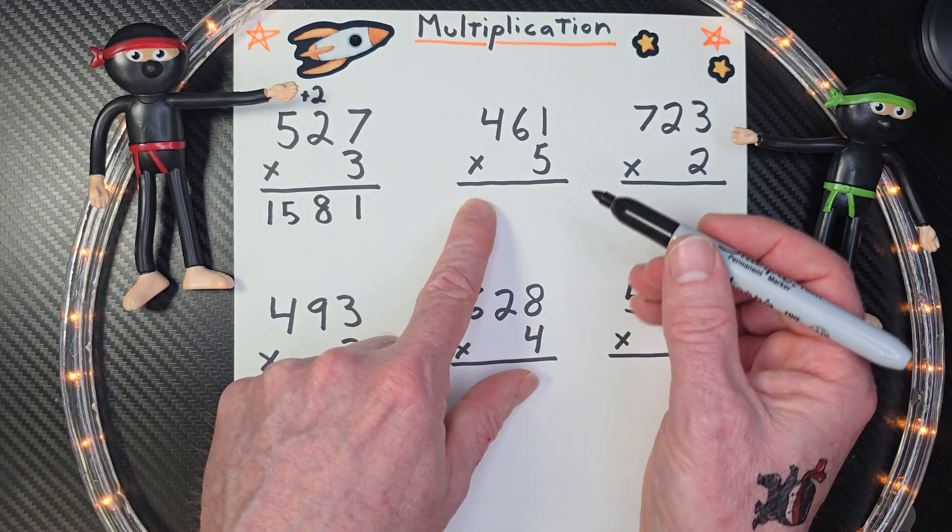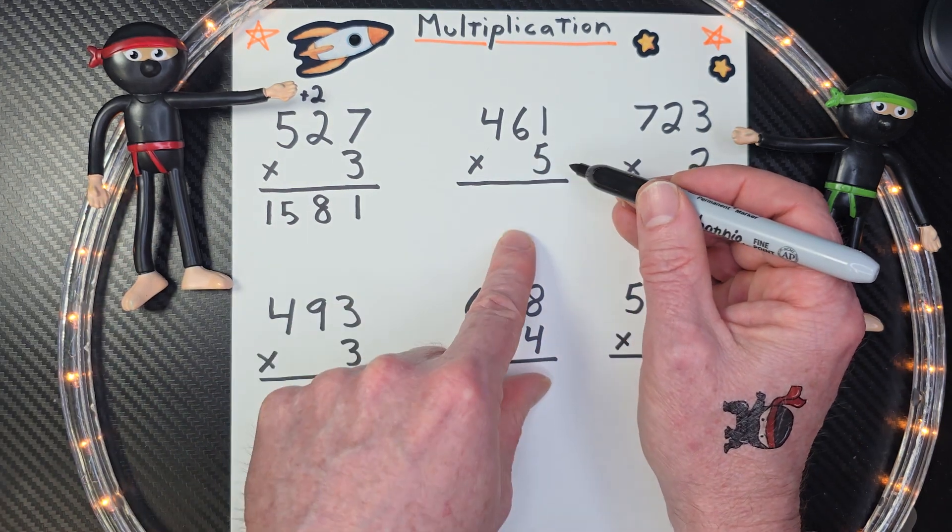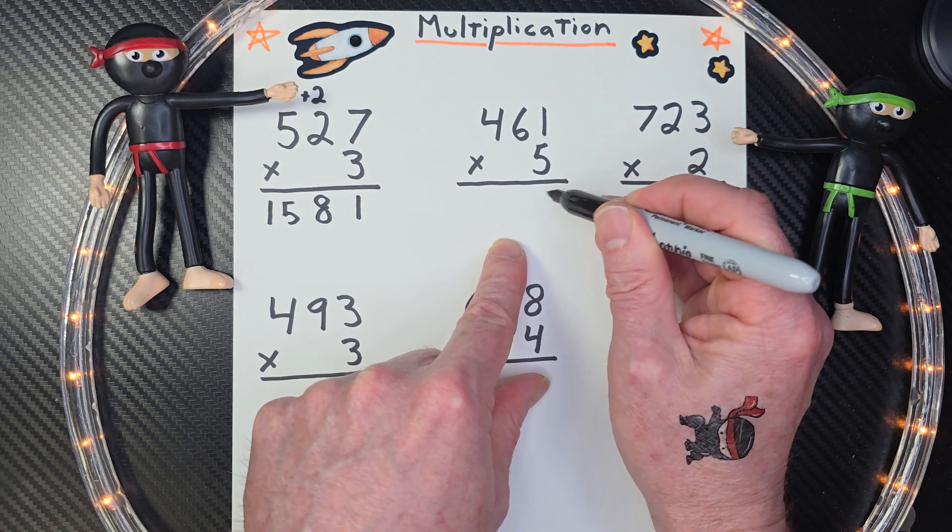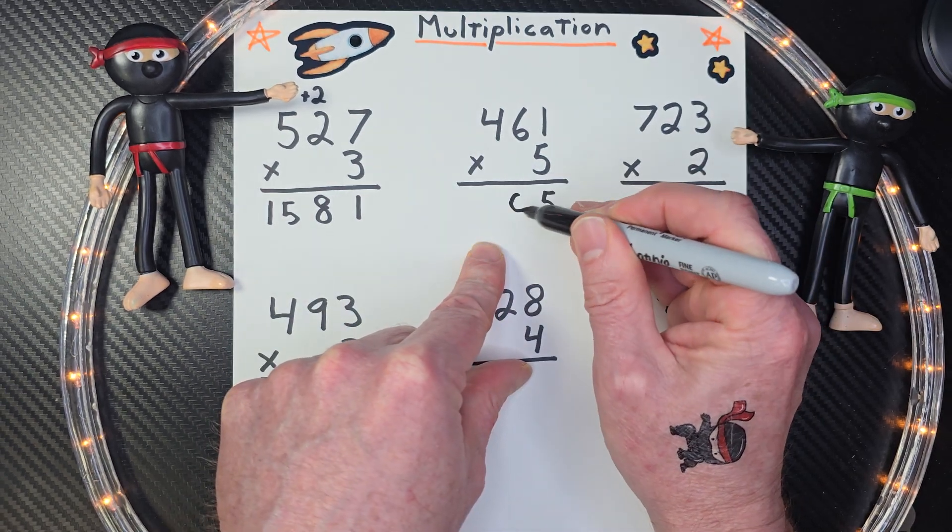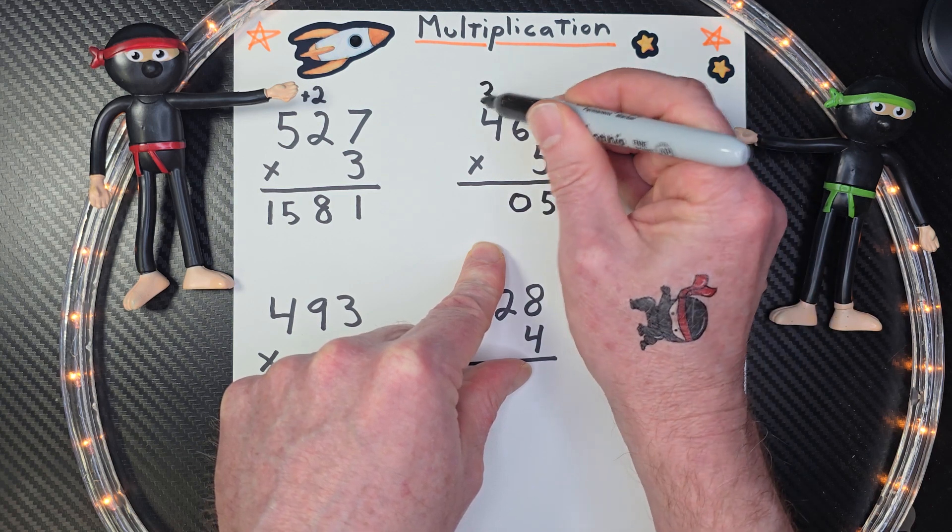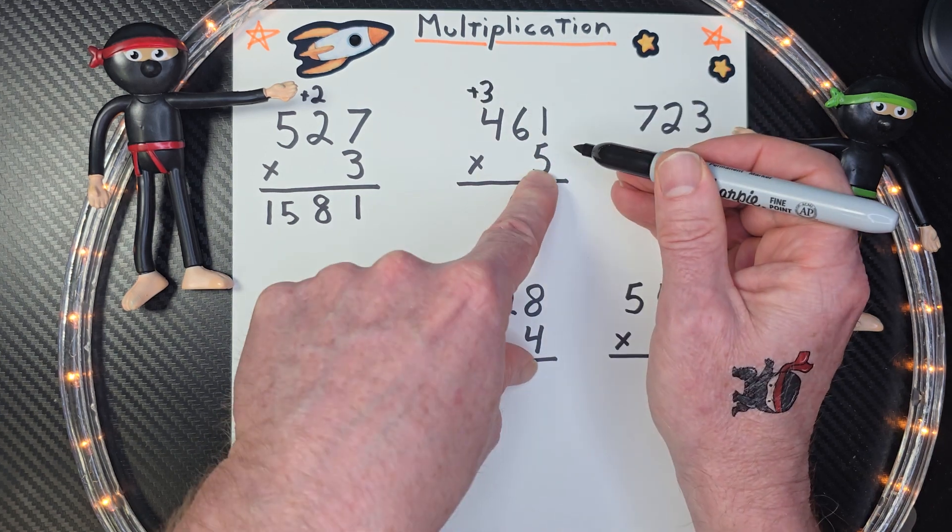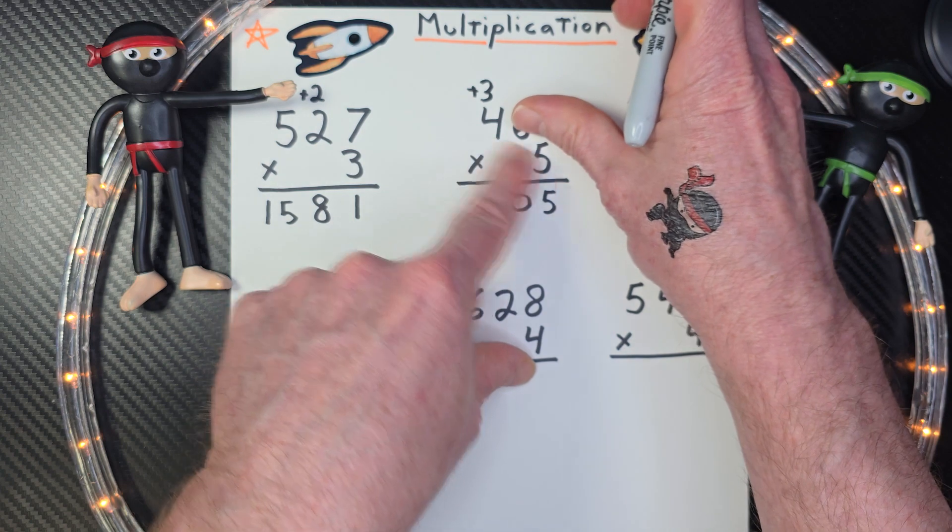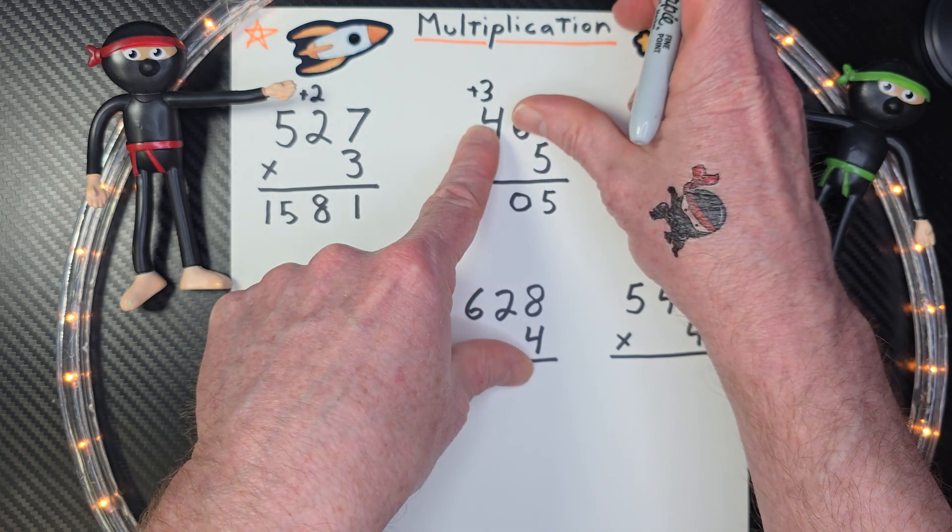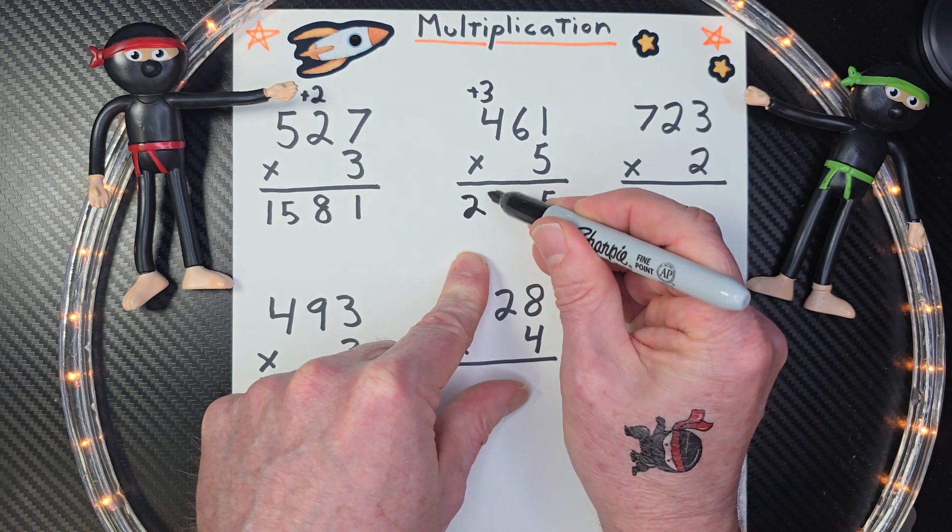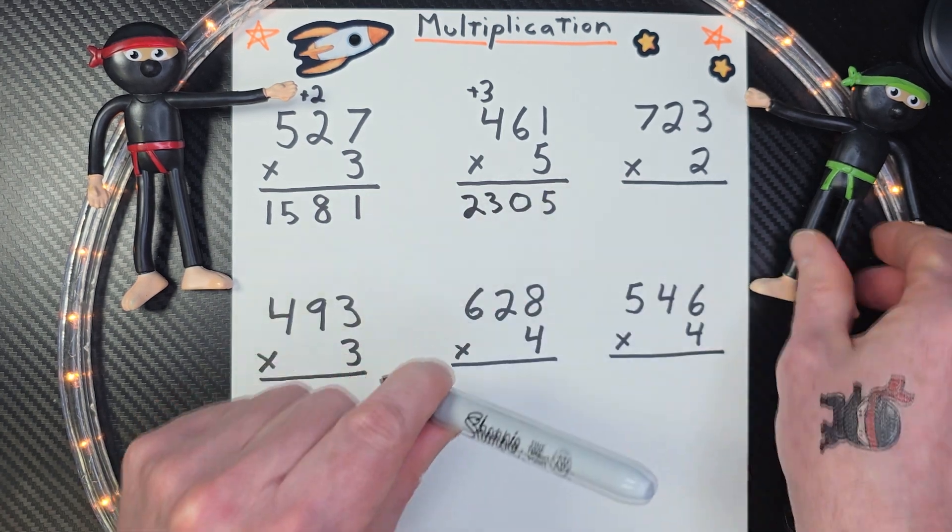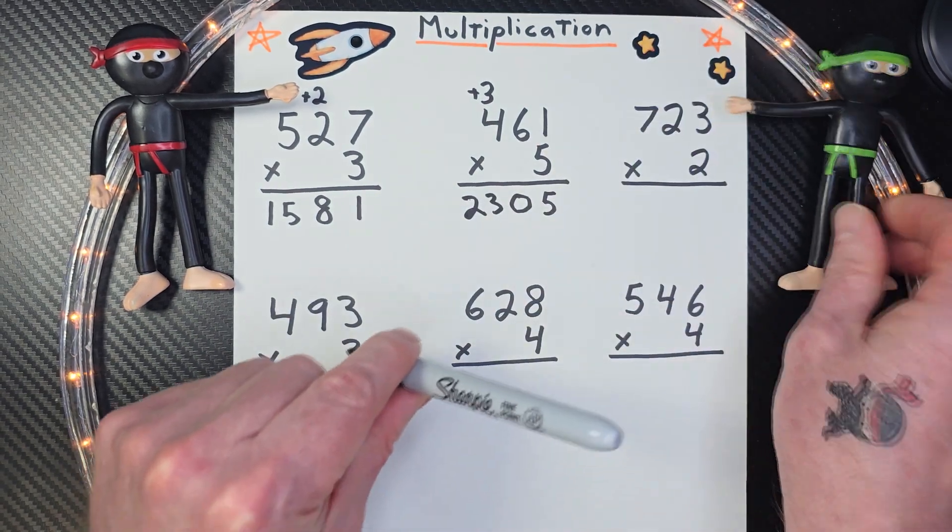All right, let's go on to the next problem right now. 5 times 1. What is it? 5. 5 times 6, 30. So I put the zero here. I put the 3 up here. I'm going to add that 3. 5 times 4. Remember, I'm doing this number right here. 5 times 4 is 20. And then 20 plus 3 is 23. Did you get that math ninja? I did. Thank you guys.